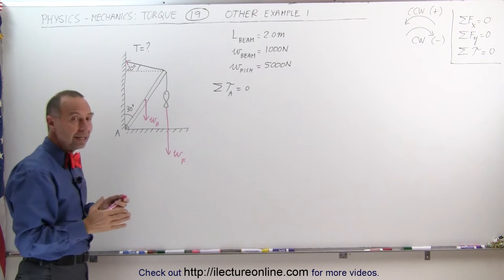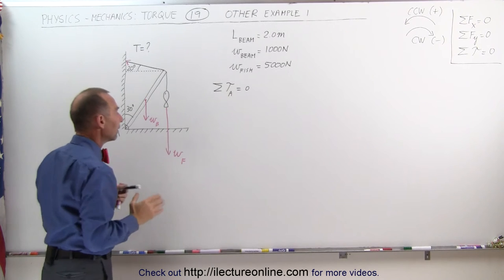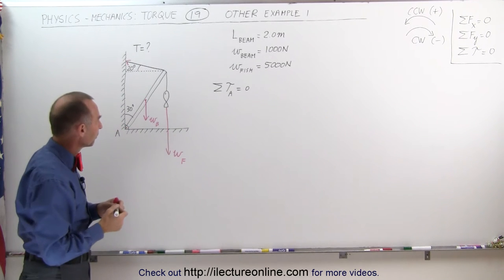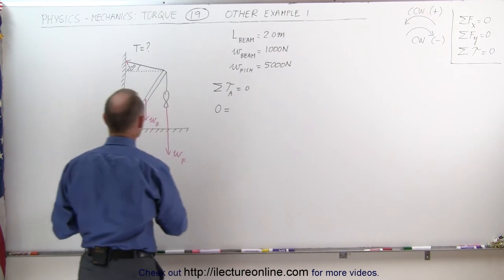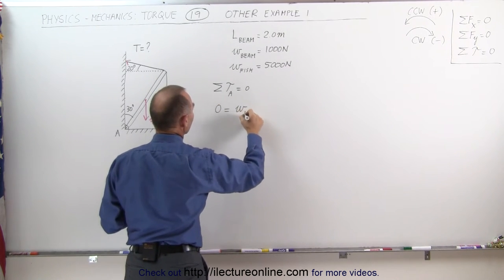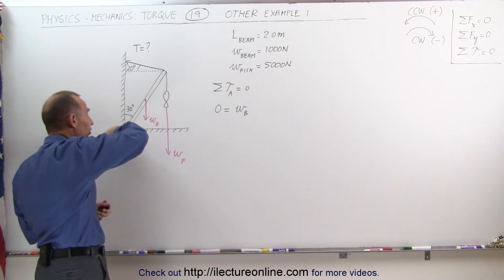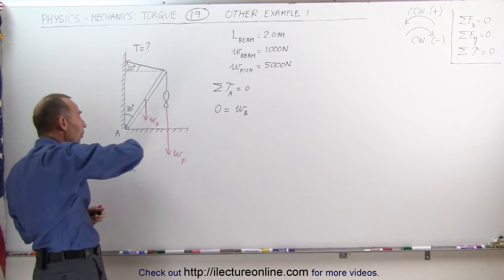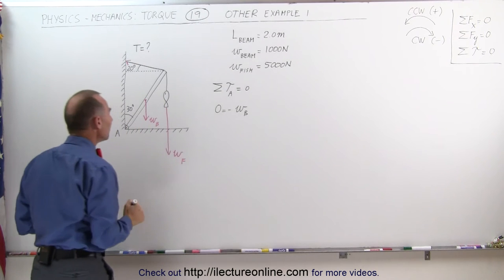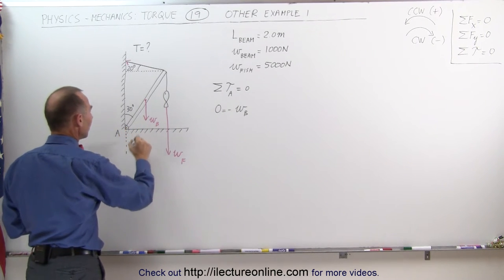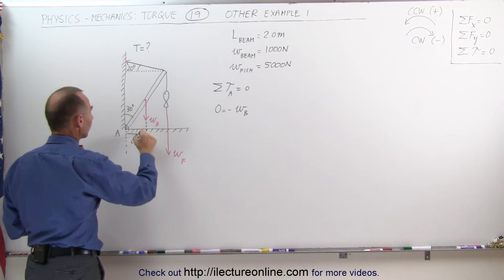We need to recognize that each of the forces will have a distance relative to the pivot point. Summing all the torques, zero will equal — starting with the weight of the beam — since that force causes a clockwise torque, that's a negative torque. So we have negative weight of the beam times the perpendicular distance from the line of action of the force to the pivot point. Let's call that distance D1.